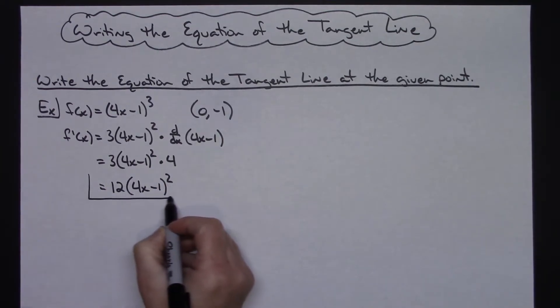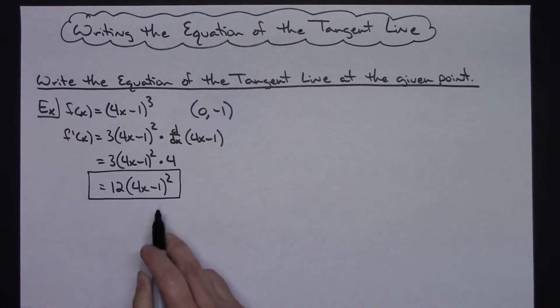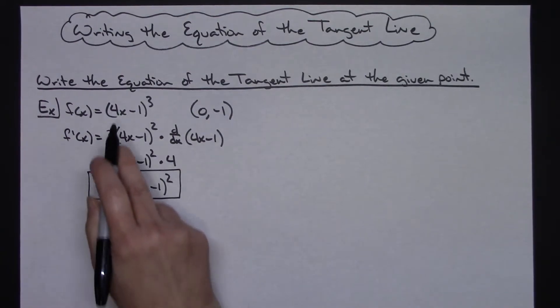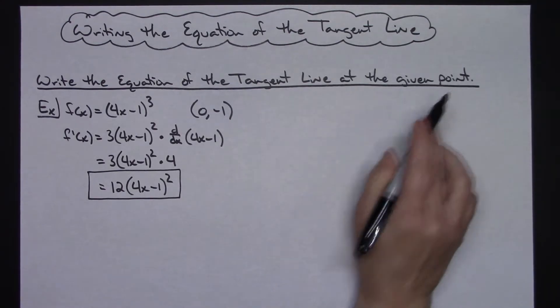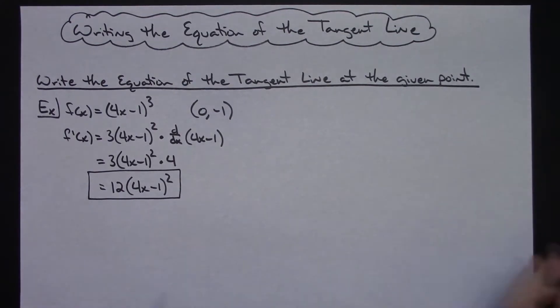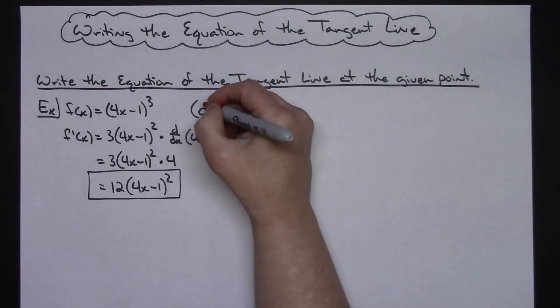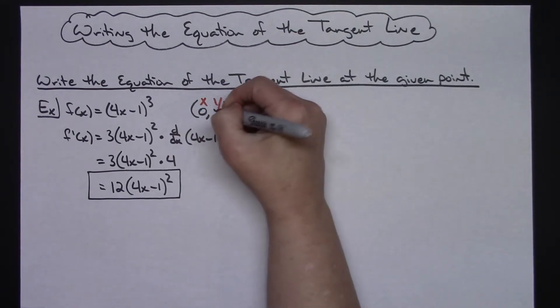Cleaning that derivative up a little bit, I'm going to have 12(4x - 1)². Now this derivative right here gives me the slope at any given point along that curve. I want it specifically at my given point. My given point is (0, -1), so that's x and that's y.